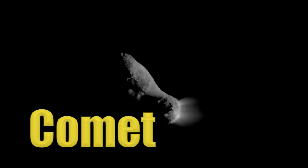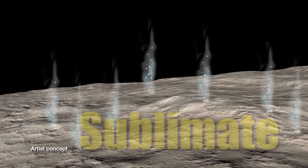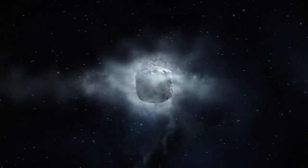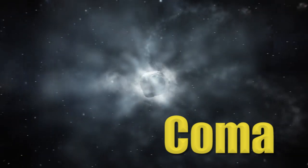Comets are cosmic snowballs made up of frozen gases, rock and dust. And when they get close enough to the sun, all those ices begin to sublimate or burn off as a dusty gas and can even create a temporary atmosphere around the comet called a coma. Solar winds blow those gases away from the sun, creating those famous comet tails.